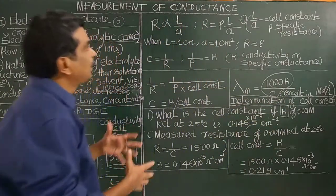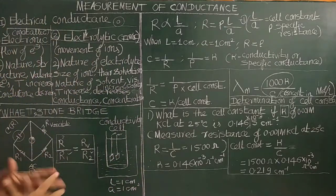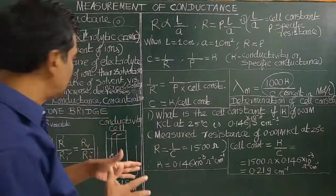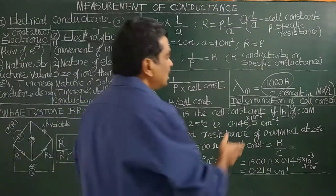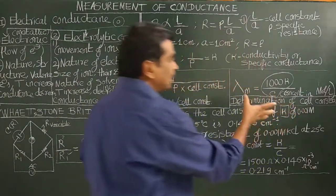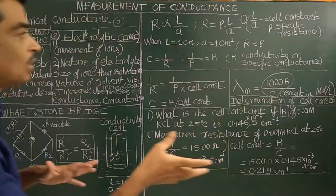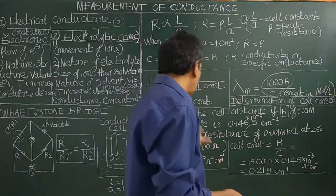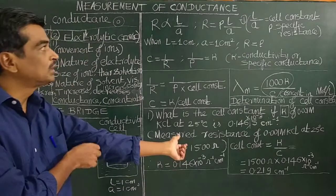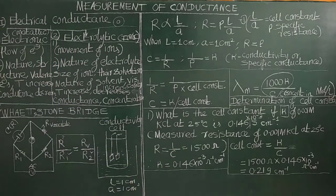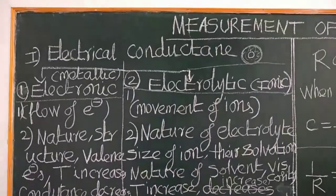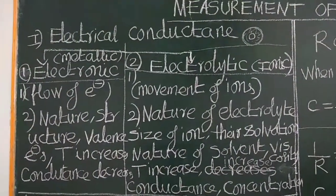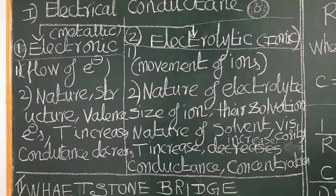In this class, we have seen how the conductance of an electrolytic solution is measured, and how the cell constant is determined from the specific conductance of standard KCl solution at 25°C. Thank you for watching. We will continue.